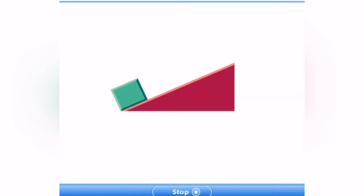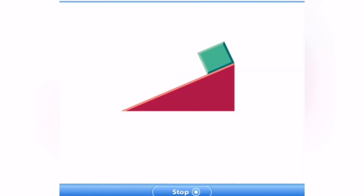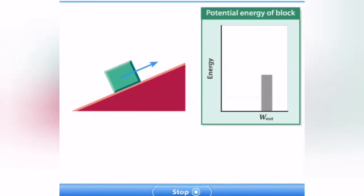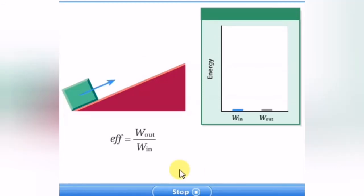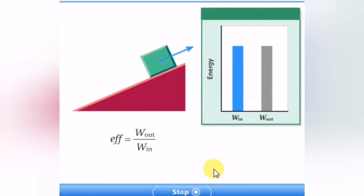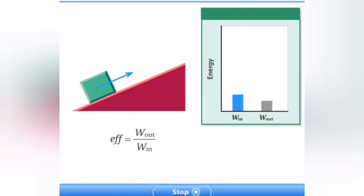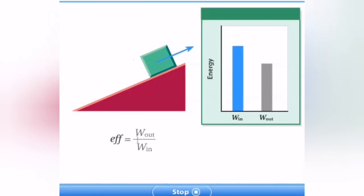Mechanical efficiency compares the amount of work/energy output by the machine to the work/energy input. Energy is put into the system by the force that moves the block up the incline; the block gains gravitational potential energy as output work. Efficiency = W_out / W_in. In a frictionless system, energy gained equals energy input and efficiency = 1. In real-world machines, energy is always lost to friction, so efficiency is always less than 1.